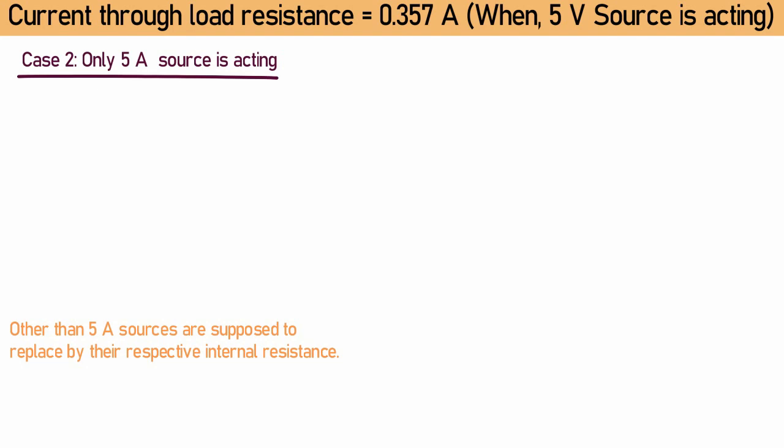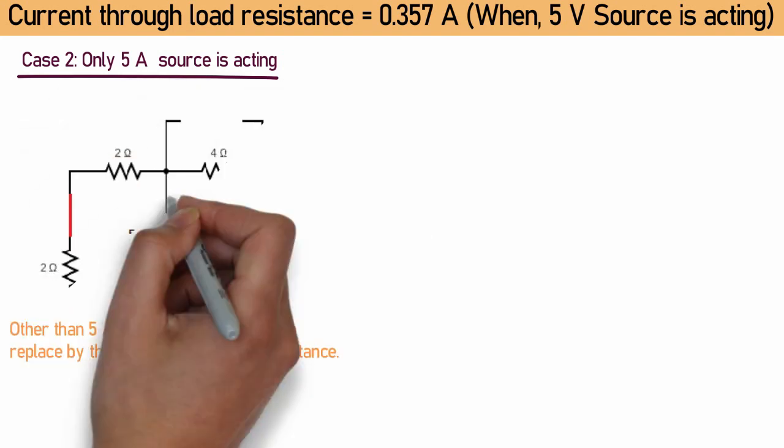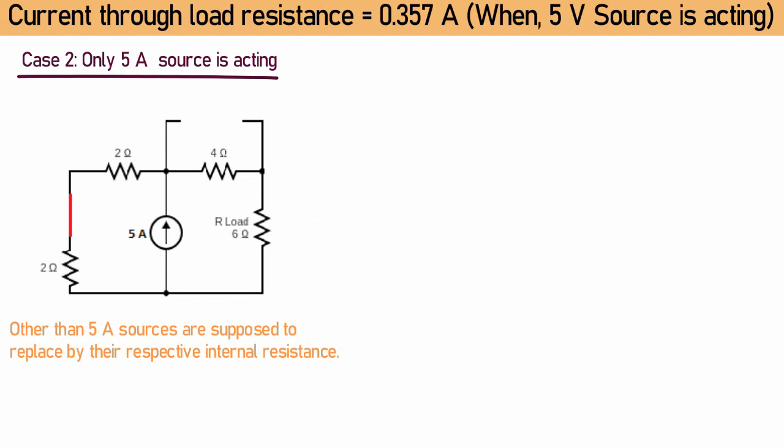Hence, in our case, 5V voltage source is sorted and 10A current source is open circuited. This circuit can be rearranged as shown here.